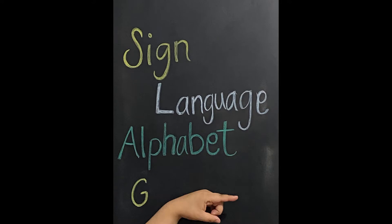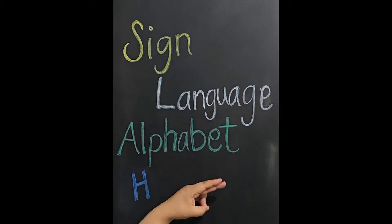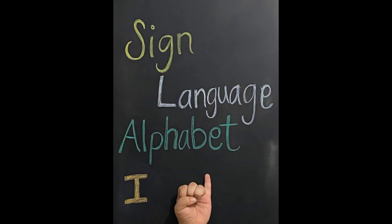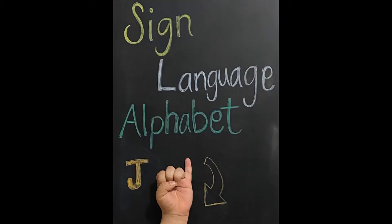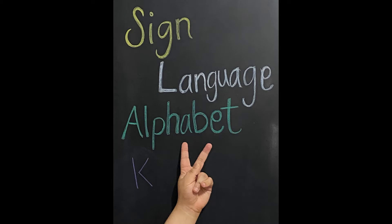G is like if you're pointing, so you just use your index finger and everything else should be curled up. H is like G but instead of just using your index finger, you're going to also be using your middle finger. I, you're just going to be making a fist with your pinky up. J is the same as I but you're going to make the movement of a J. K is like a peace sign but you're going to put your thumb on your middle finger.